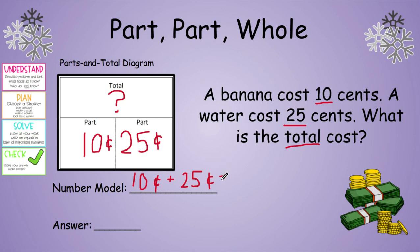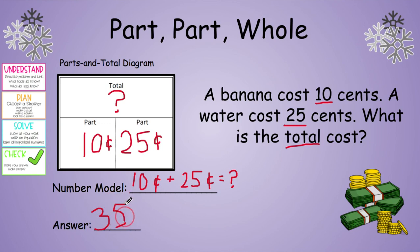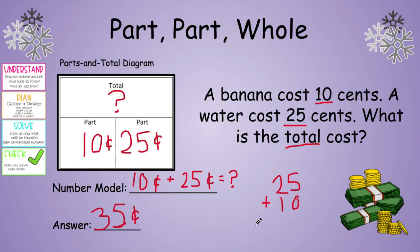Do we have a total yet? We don't, so we're going to put a question mark. Our answer goes down here: 10 plus 25 — 10 more than 25 is 35. Don't forget to put the cents sign. If you want to double check your work, you could stack and add off to the side.